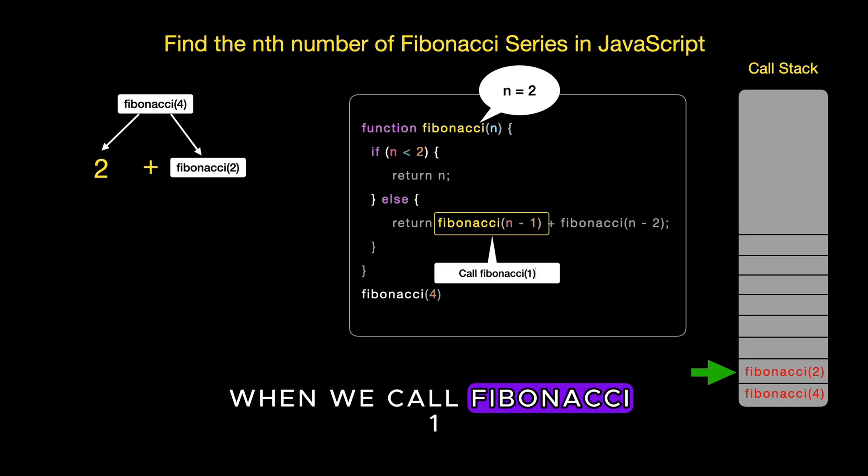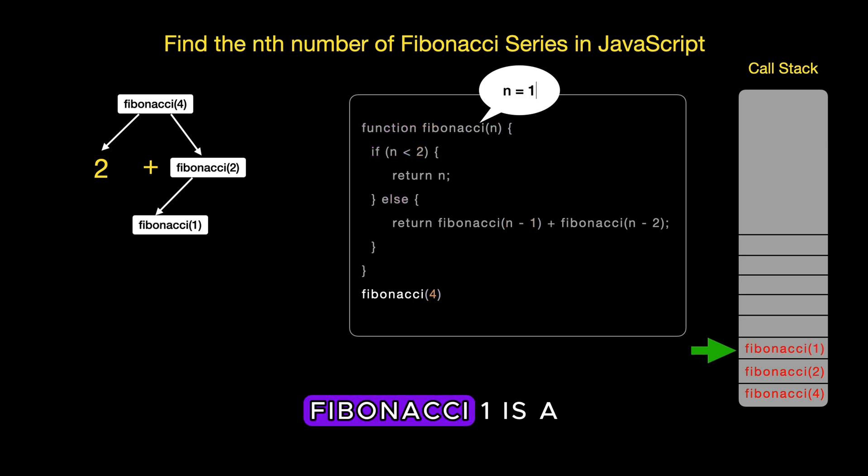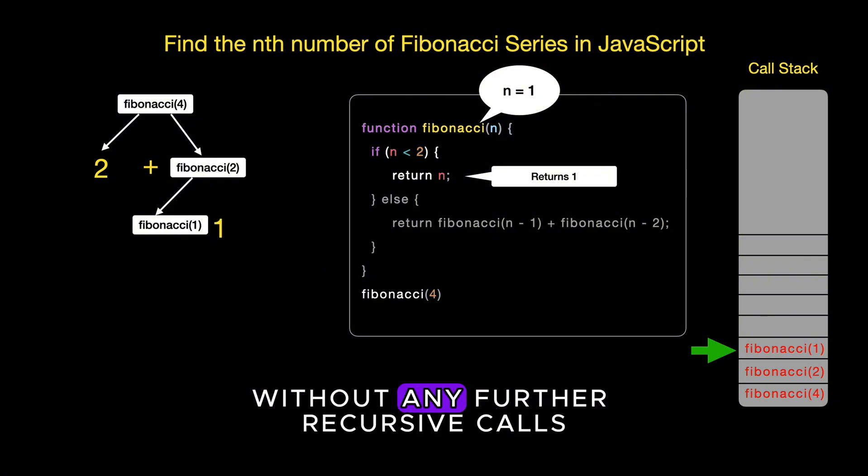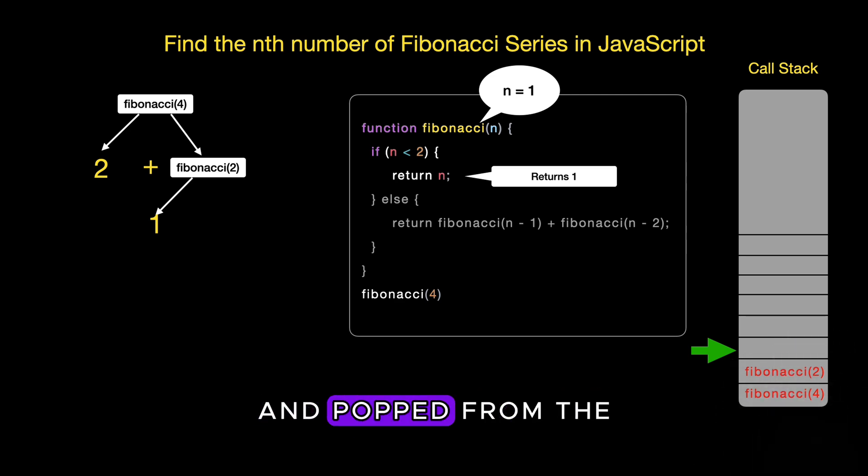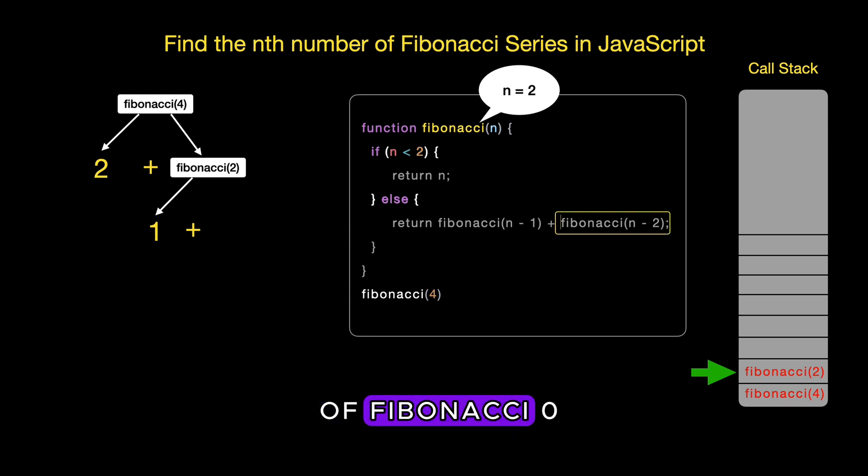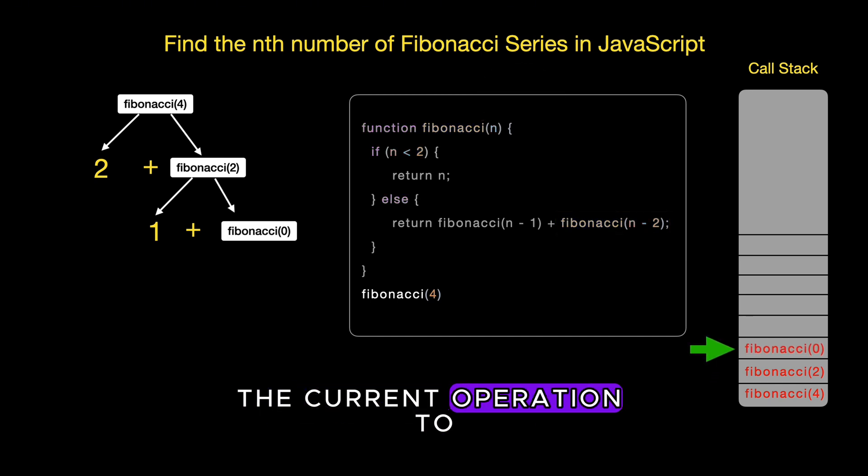When we call Fibonacci 1, this operation is added to the call stack. Fibonacci 1 is a base case in the Fibonacci function, which means it will return the value 1 immediately without any further recursive calls. This value is quickly resolved and popped from the call stack. Next, the computation of Fibonacci 2 requires the evaluation of Fibonacci 0. This function call is placed on top of the call stack indicating that it is the current operation to be addressed.